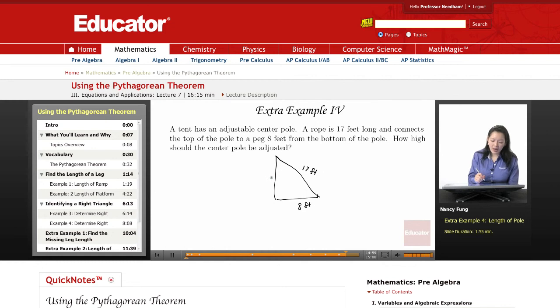We want to see how high we should adjust this center pole here. So using the Pythagorean theorem, a² + b² = c², we know that the pole is standing straight up, creating a 90 degree angle.